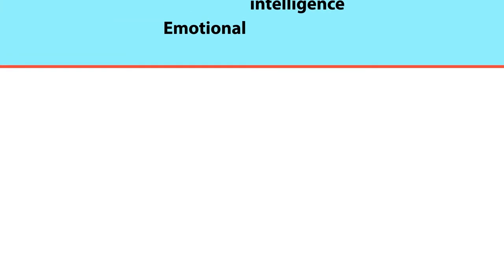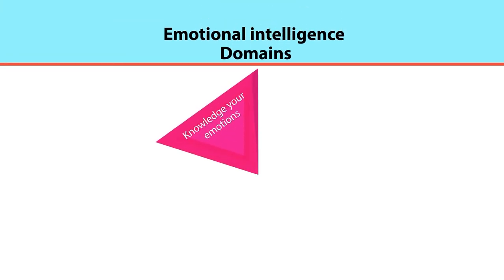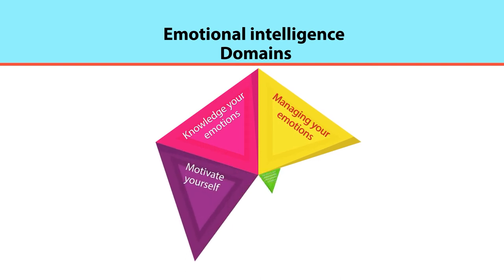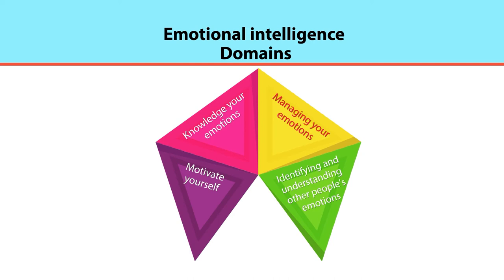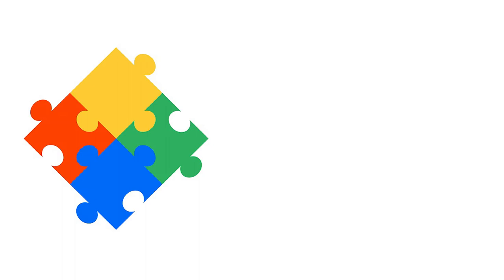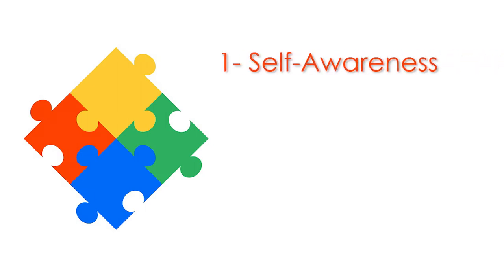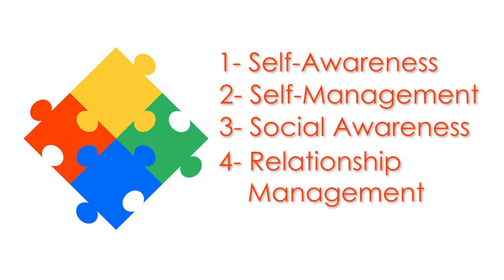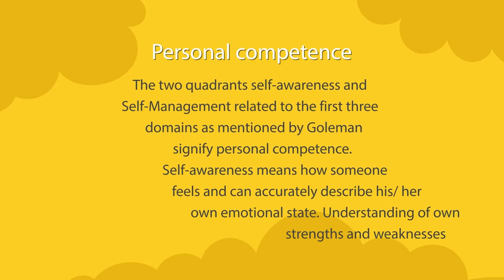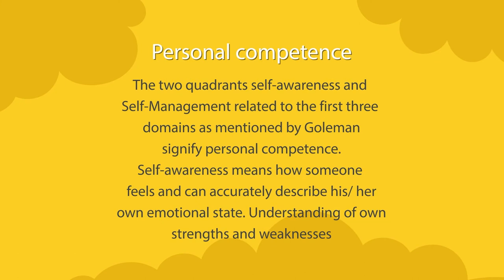Regarding the application of emotional intelligence at the workplace, the five domains of Goleman's EQ model have become standard. These five domains represent four quadrants: knowledge of your own emotions, managing your own emotions, motivating yourself, identifying and understanding other people's emotions, and managing other people's emotions and relationships. The resulting four quadrants are self-awareness, self-management, social awareness, and relationship management.